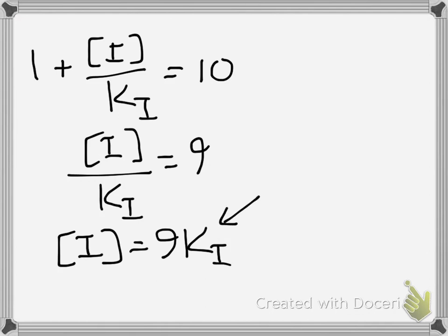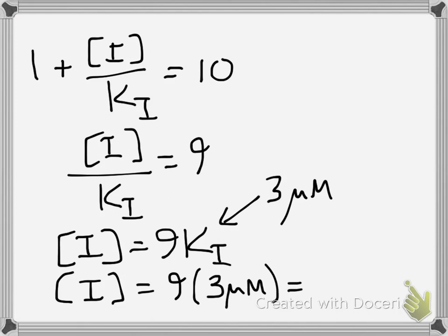And at this point, you go back to the original setup of the problem and you're told that Ki equals 3 micromolar, so you can just plug that right in. So the concentration of inhibitor is 9 times 3 micromolar, which is equal to 27 micromolar. And that's it.